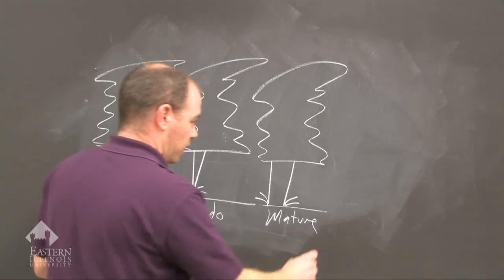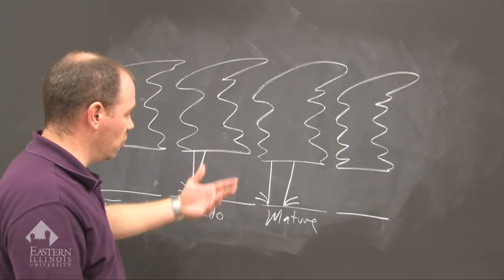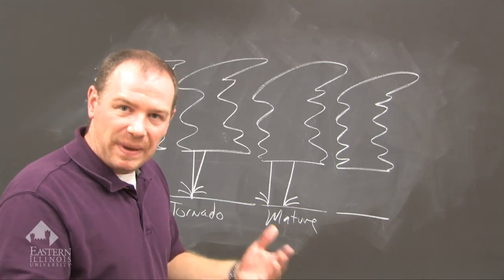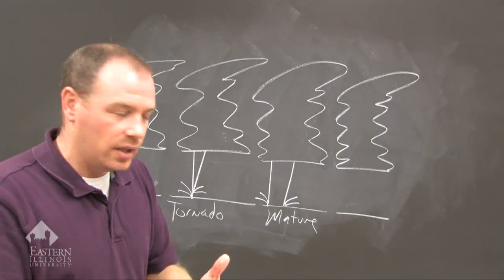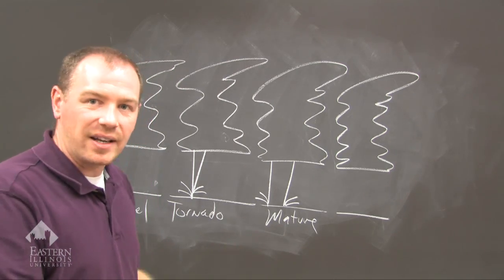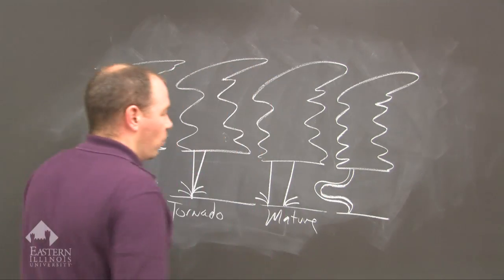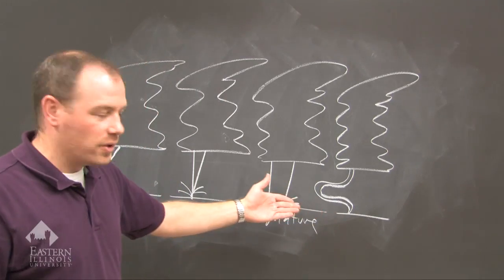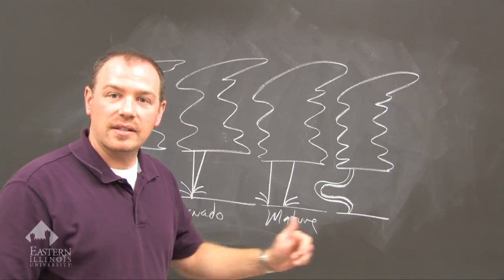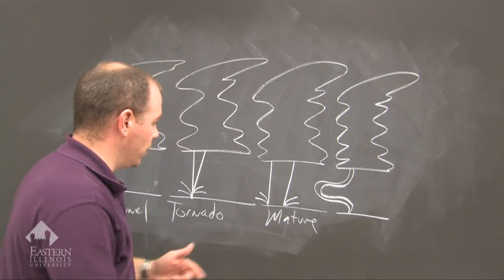The last stage of tornado development is when the updraft — which is essentially that tornado, the tornado is the updraft to this supercell — loses its axis. It's a vortex of spinning air, and when you lose the axis, it wobbles like a rope. When it loses its axis and wobbles looking like a rope, it's going to fall apart. Not to say that something back behind you couldn't produce another developing tornado. This is the dissipation stage.